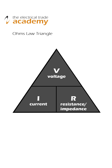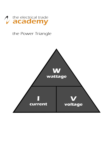Voltage, current, and resistance — or known as impedance in AC circuits — have an intrinsic mathematical relationship which we know as Ohm's Law. Voltage and current also have an intrinsic mathematical relationship with another factor called wattage or power, and we know this relationship in the form of the power triangle.